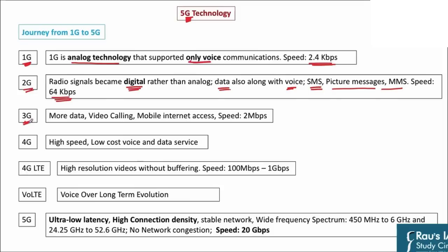Then came the time of 3G. In 3G, the speed was much more — from 64 kbps, the maximum speed one can enjoy in 3G is 2 Mbps. Mobile internet access was also possible for the first time, which was crucial. In 2G you could send SMS but internet operability was not there on the phone. Internet operability came for the first time in 3G. Speed was more, you could send more data, and because of internet access, video calling was also possible. Once again, a technological breakthrough — next generation, 3G.